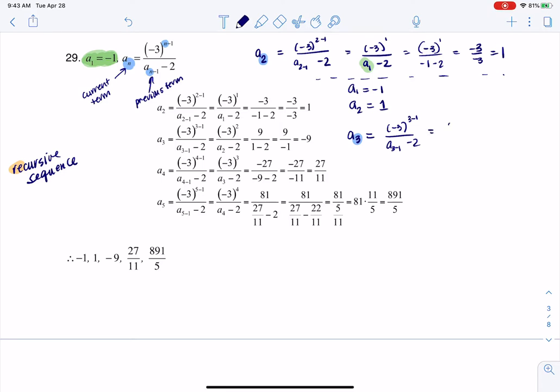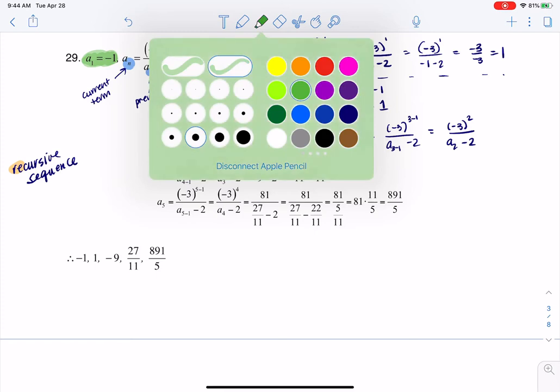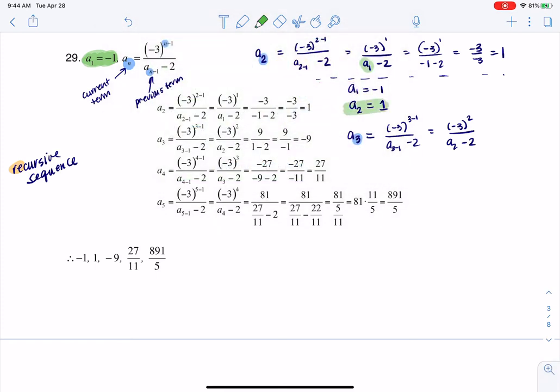So when we simplify this, this is negative 3 squared over a sub 2 minus 2. And again, I'm going to recurse. I'm going to go back and I'm going to pick up that previous term, which a sub 2 was 1.